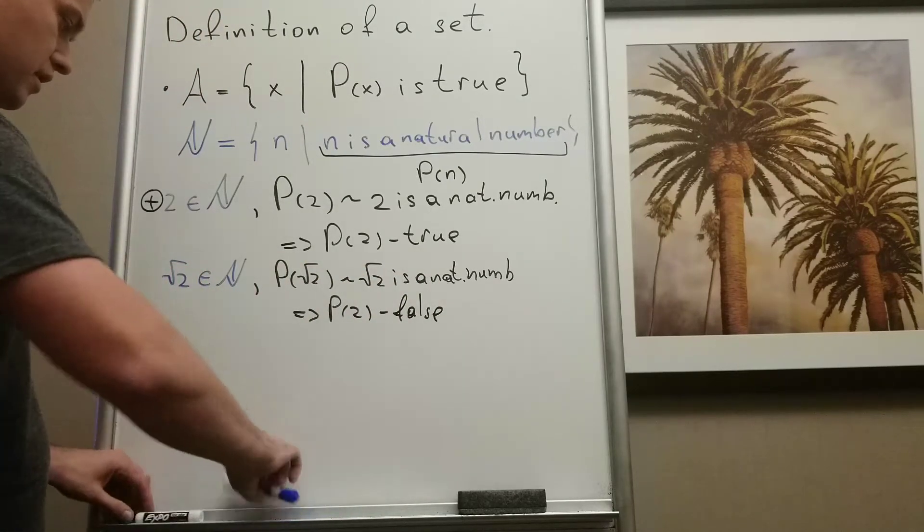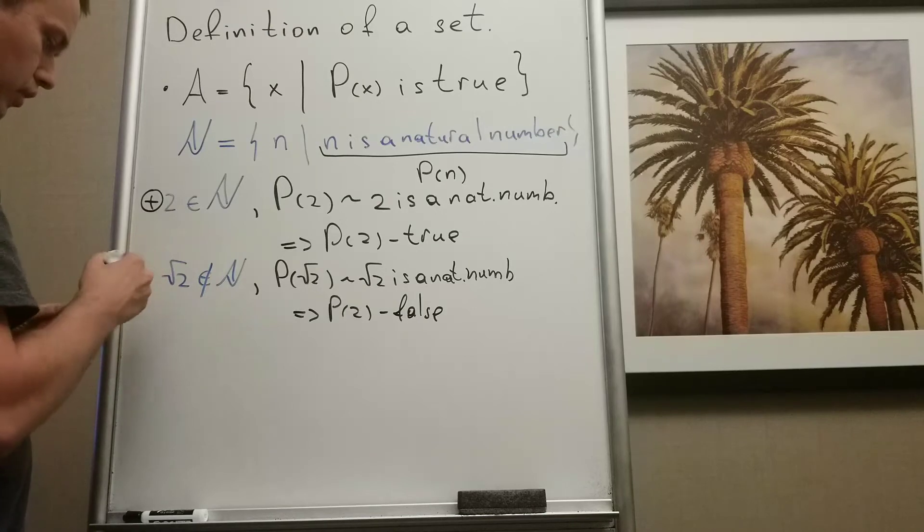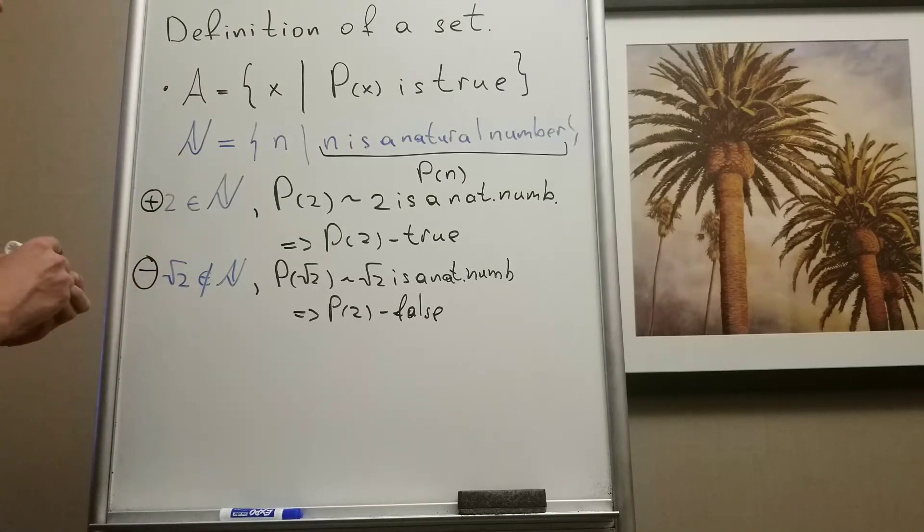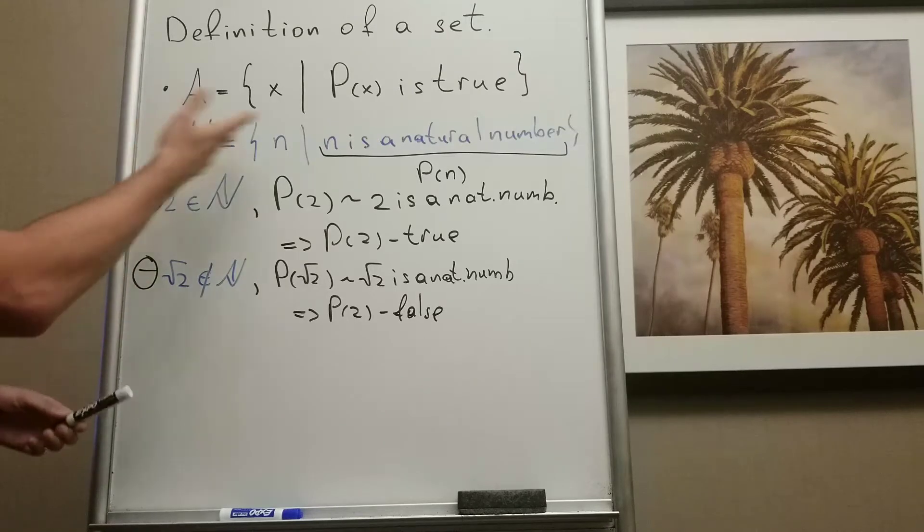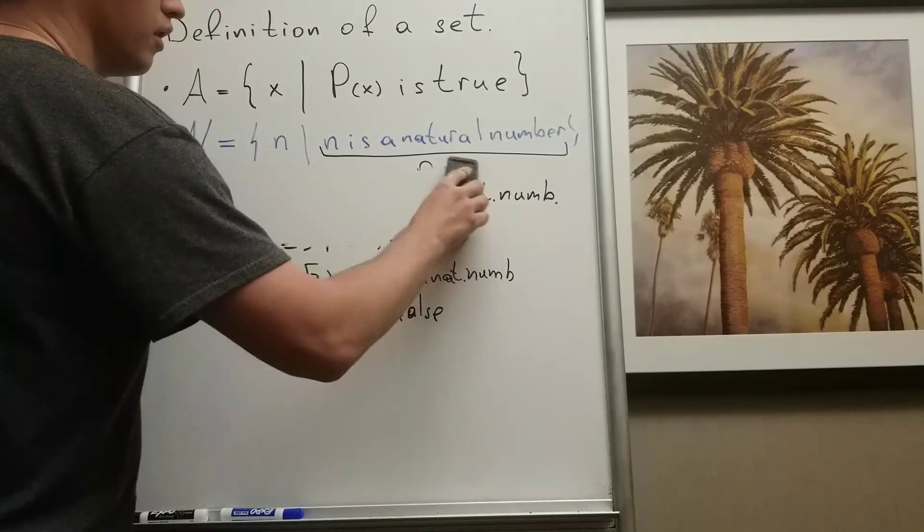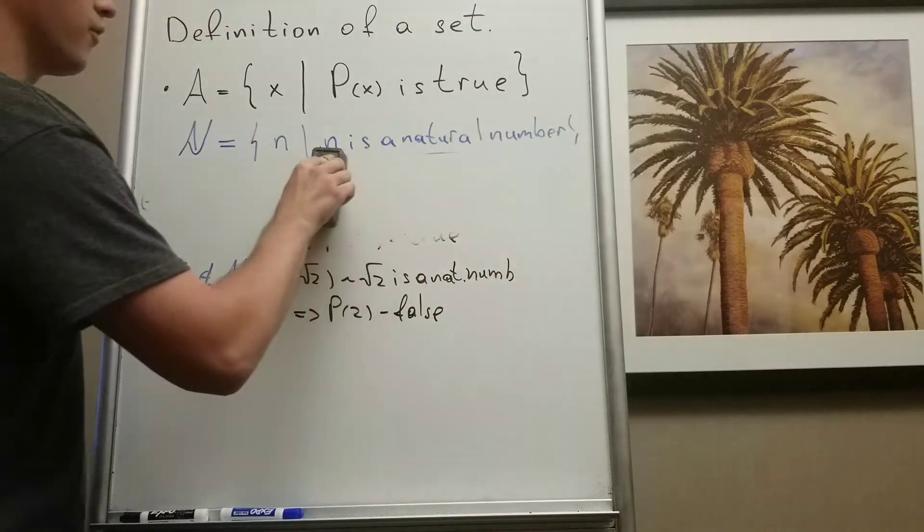So this means that this is false, so square root of 2 doesn't belong to N. So this is how we write this. Another example - let's take, for example...